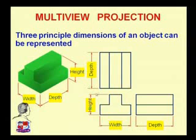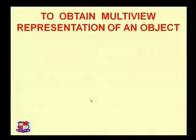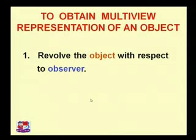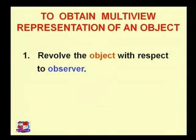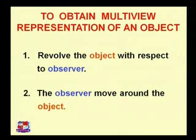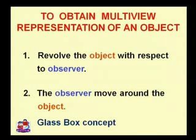If we draw all other three views as well, it is called multi-view projection representation. To obtain multi-view representation of an object, three methods are available. The first method is to revolve the object with respect to the observer — the observer remains stationary but the object is revolved. The second method is the observer moves around the object. The third method is the glass box concept. We will use all three methods one by one.